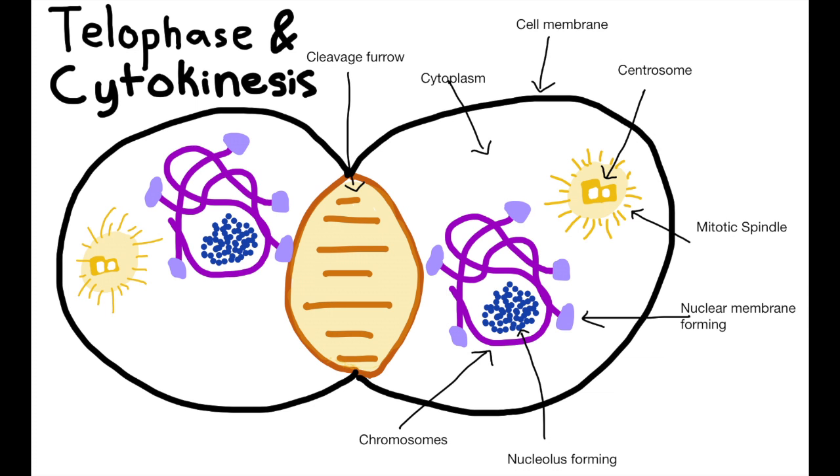In an animal cell, cleavage furrow appears at the middle and divides the cytoplasm into two equal halves, each with a nucleus and a cell membrane.